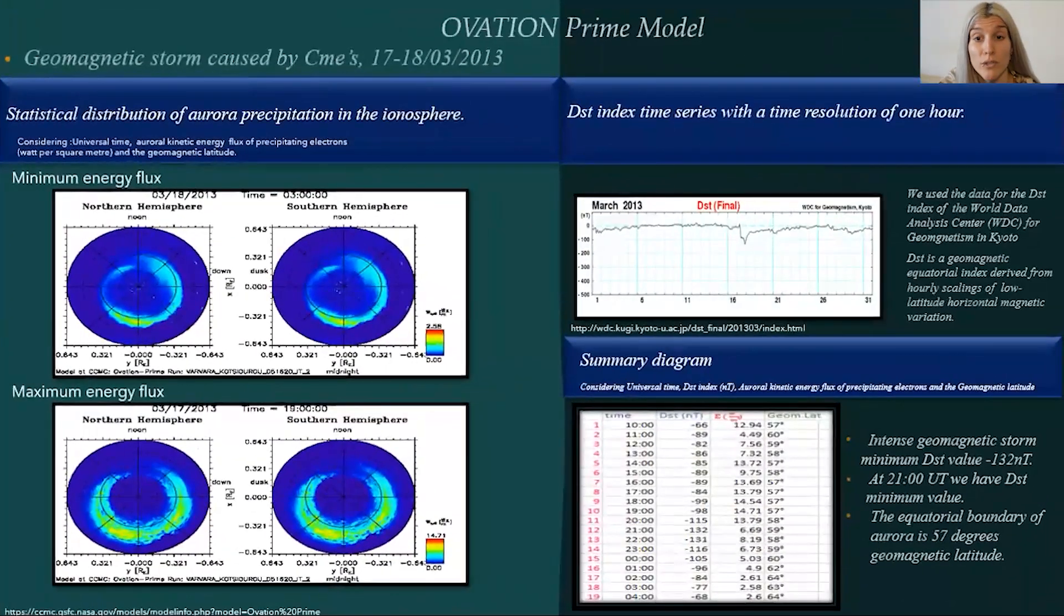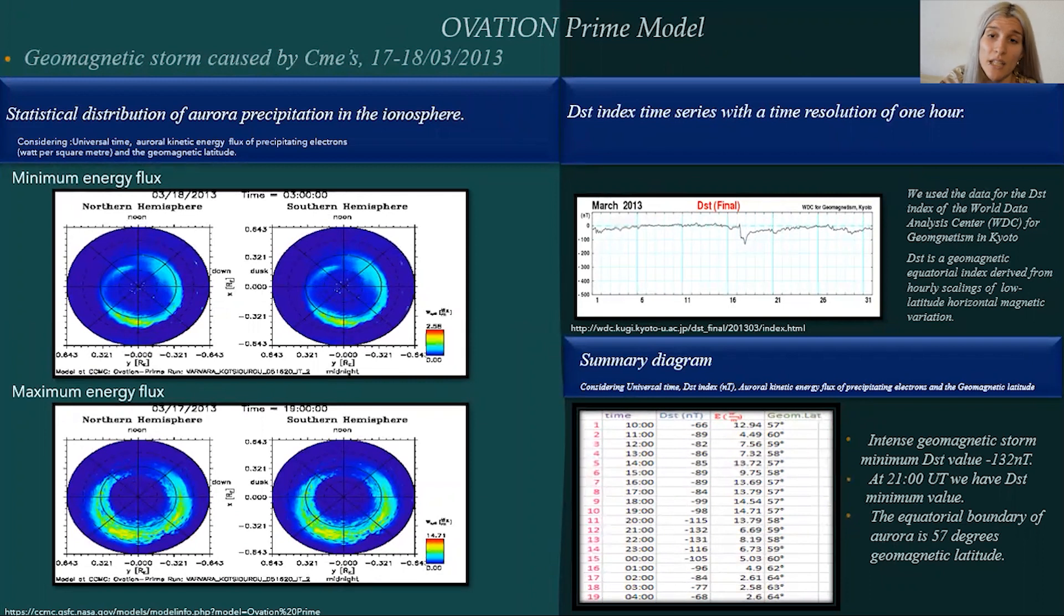Now, let's move on to our second case, the next geomagnetic storm with similar intensity caused by CME between the 17th and 18th of March of 2013. Let's focus on the differences in our summary diagram.